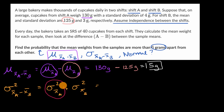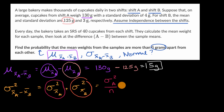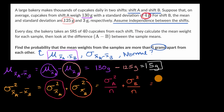The variance of the sampling distribution for shift A's sample means equals the population variance of shift A divided by the sample size. The same applies for shift B: it's the variance of shift B divided by the sample size. The population variance for shift A is the square of the standard deviation, which is four squared equals 16 grams squared, divided by the sample size of 40.